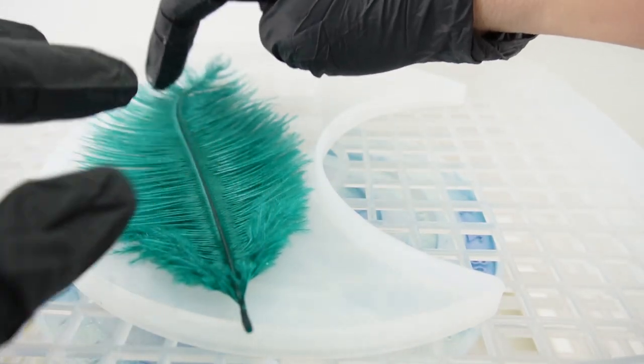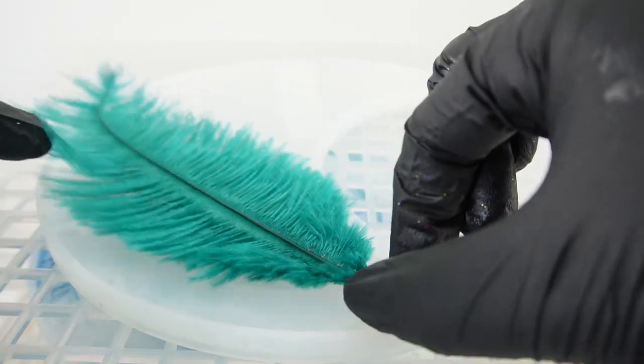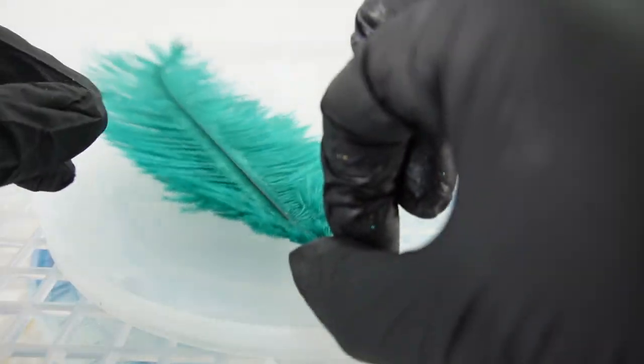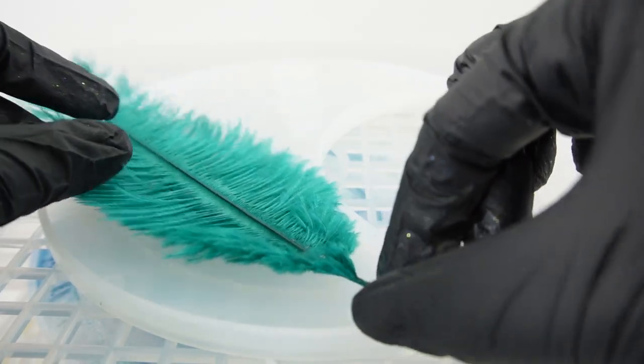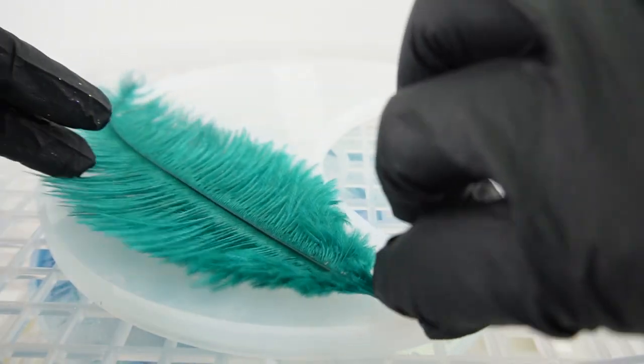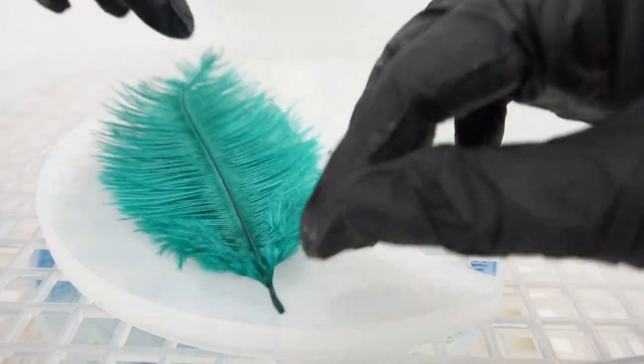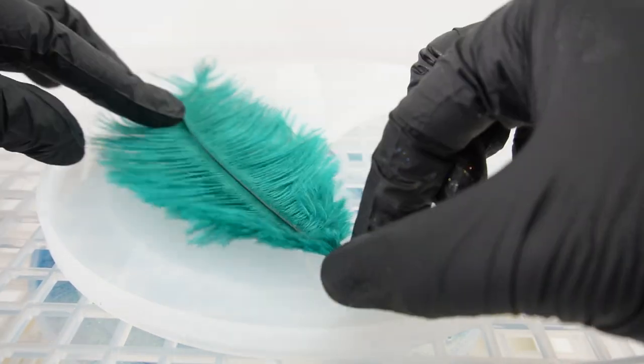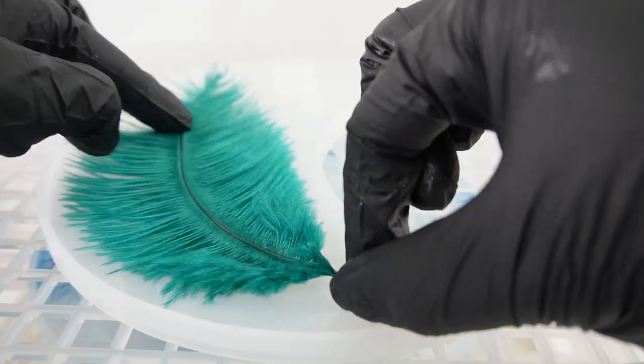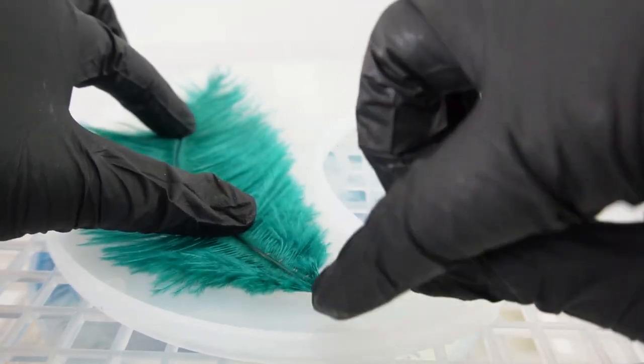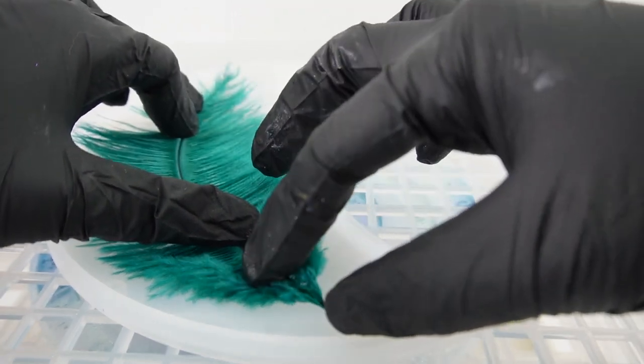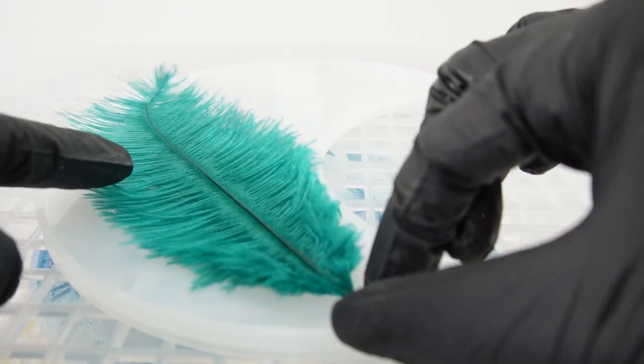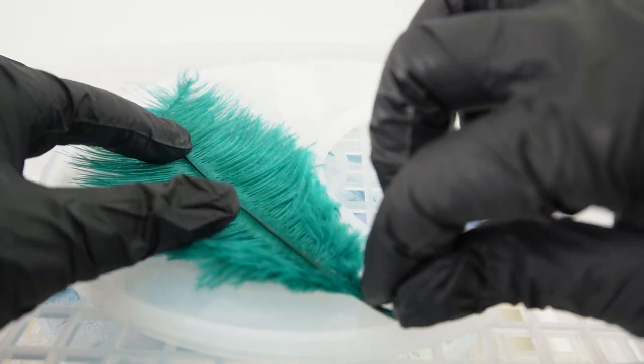But I think what I can do is actually put the feather down first and then pour the resin. So my problem here is this feather is not curving the way I want it to. I kind of want it to be like this. It's not quite staying in that position.